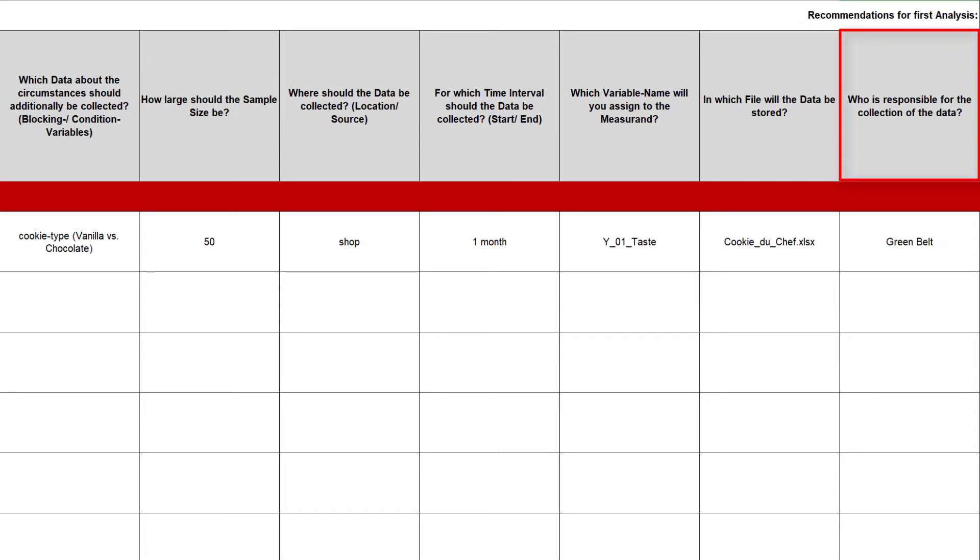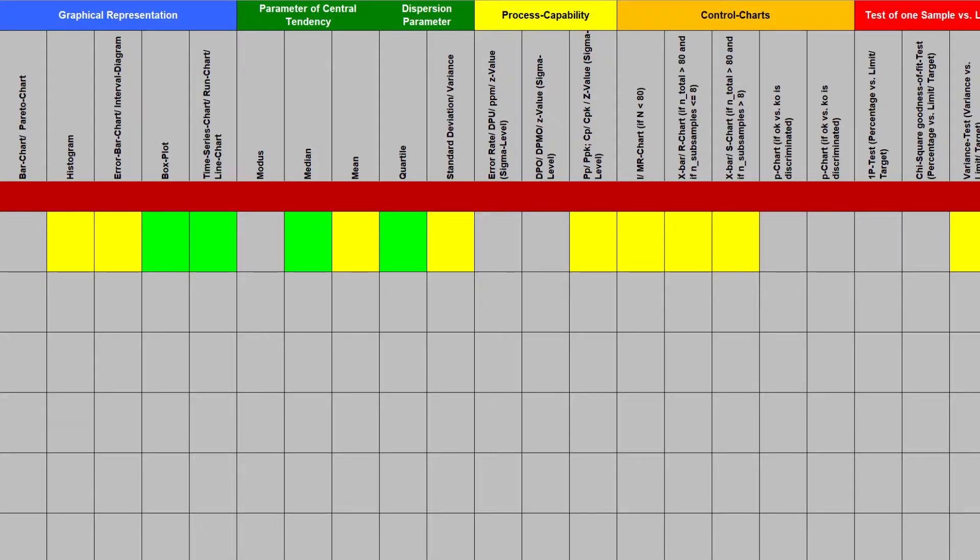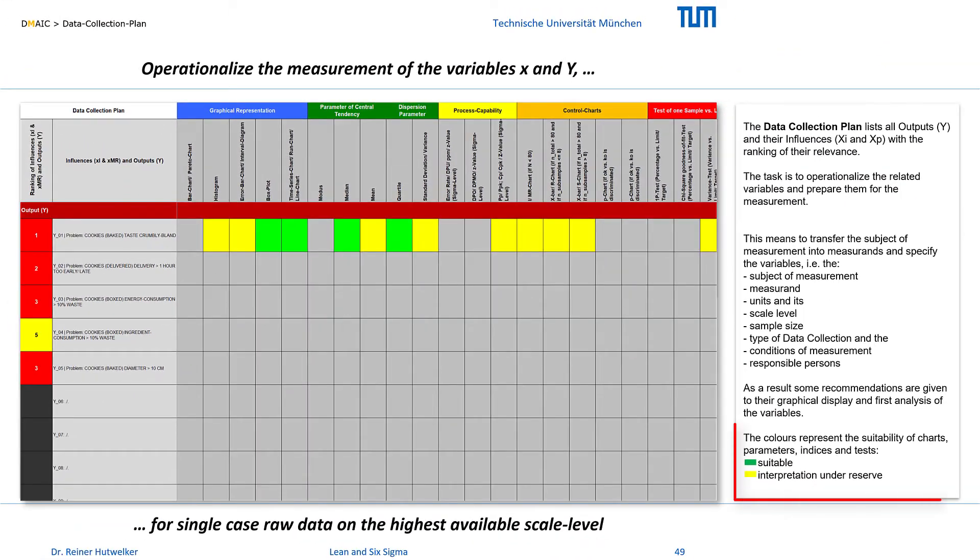After determining the scale level, SigmaGuide automatically derives appropriate charts for graphical representations of the data, the appropriate statistical parameters, procedures to calculate the process capability, appropriate control charts, and one-sample tests. The green cells mean full recommendation because the underlying scale carries all necessary information. Yellow means that you might interpret the results with reservation, because the scale does not completely carry the necessary information. The calculation of the mean and standard deviation for the ordinal rating scales are only two examples that are widely used in practice. These suggestions in green and yellow determine the first framework of your analysis strategy. Now you know exactly how you can analyze your data in the first step.